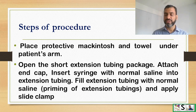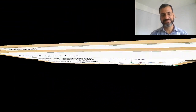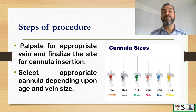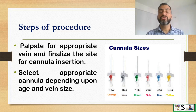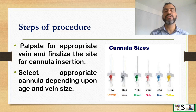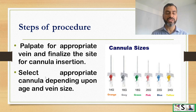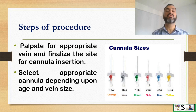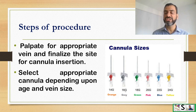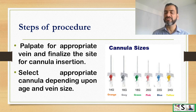Palpate the patient's arm to find the best vein for venipuncture. Select an appropriate cannula depending upon the age of the client and size of the vein. Available cannula sizes with color coding are 14G, 16G, 18G, 20G, 22G, and 24G. Normally the smallest gauges are used for infants, middle gauges for children, and larger gauges for adults.